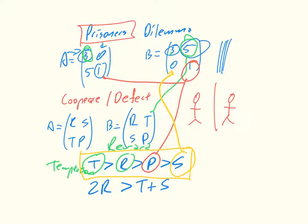We also have this inequality here, which is that the reward must be less than the average of the temptation and the sucker.